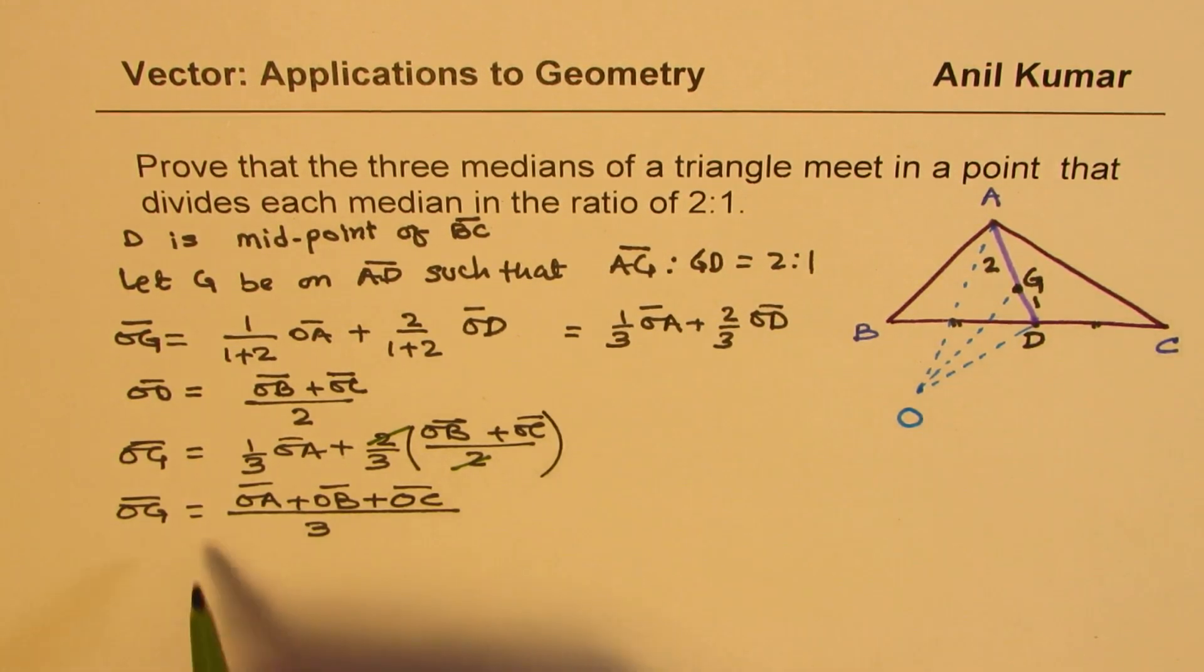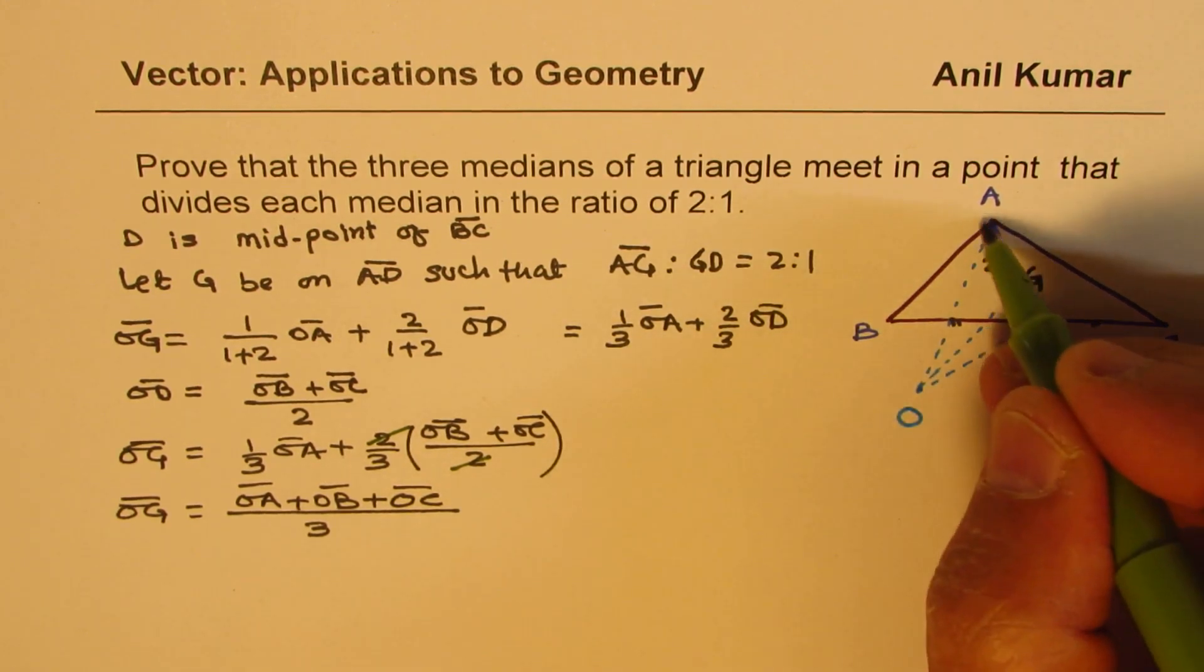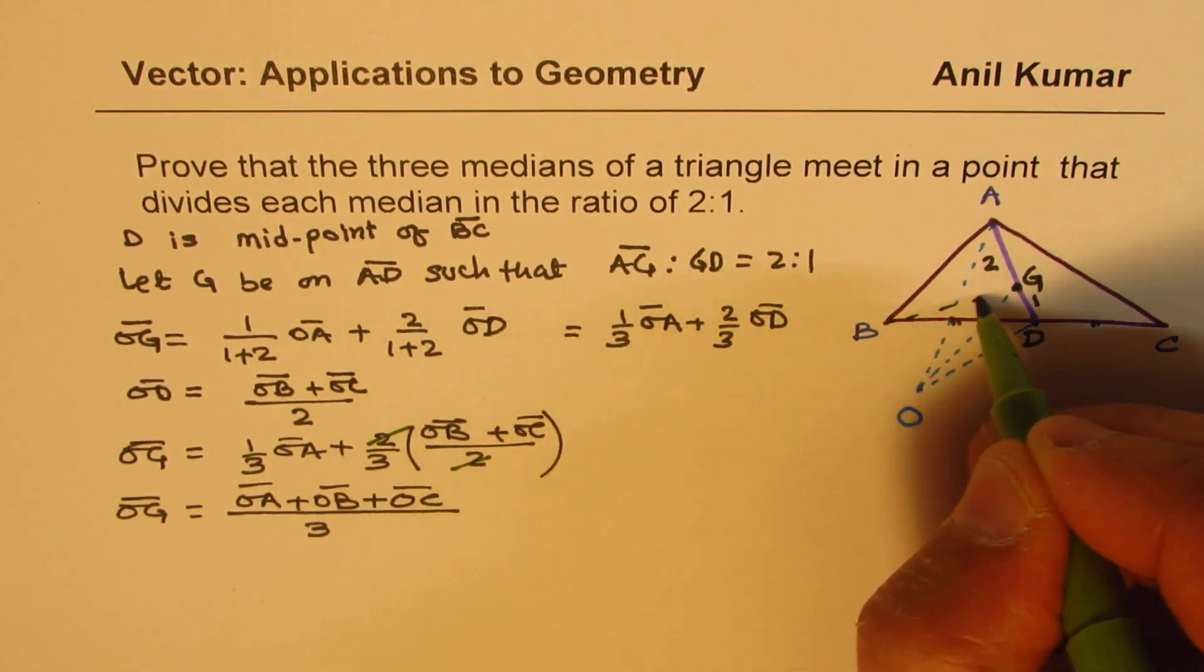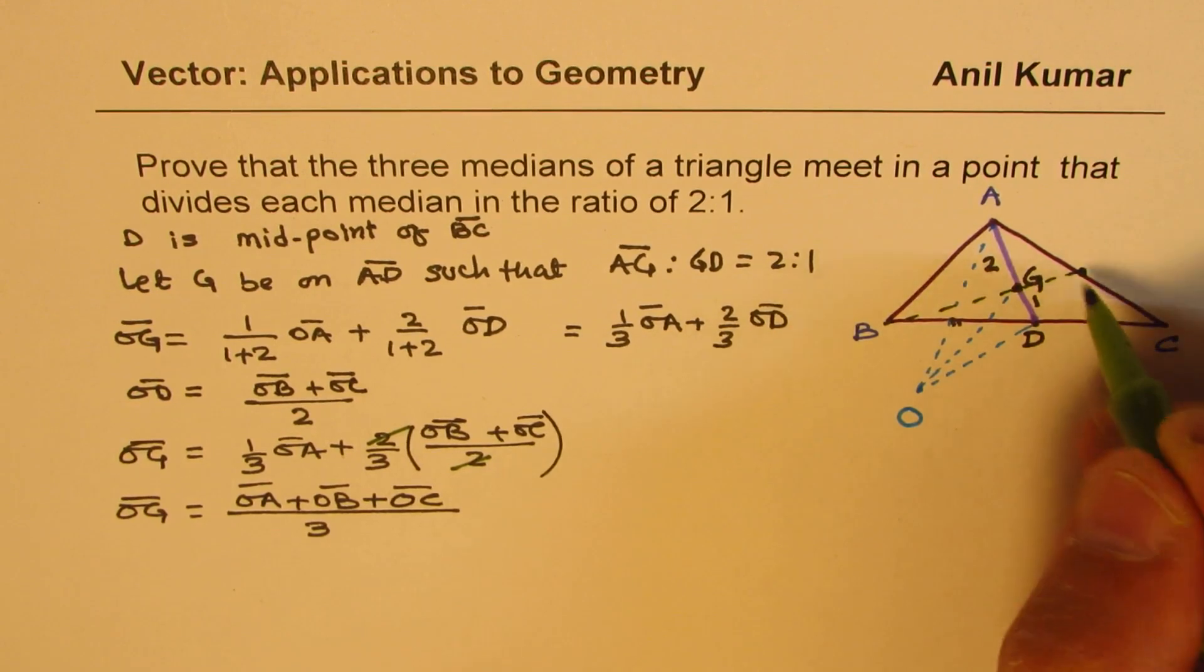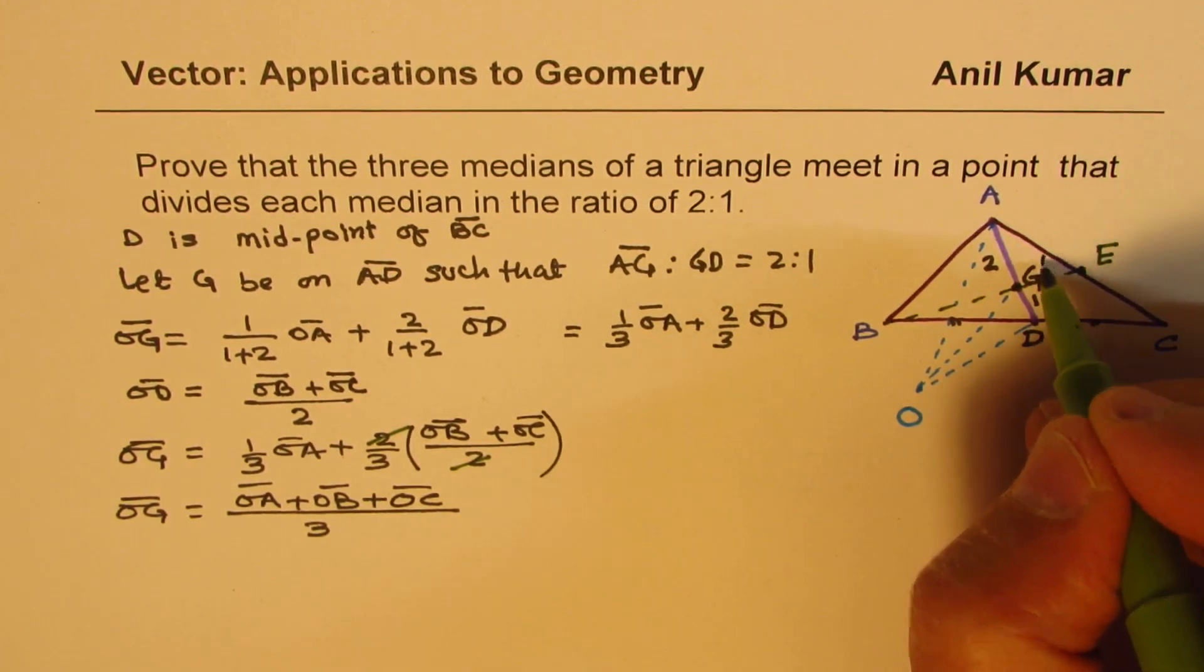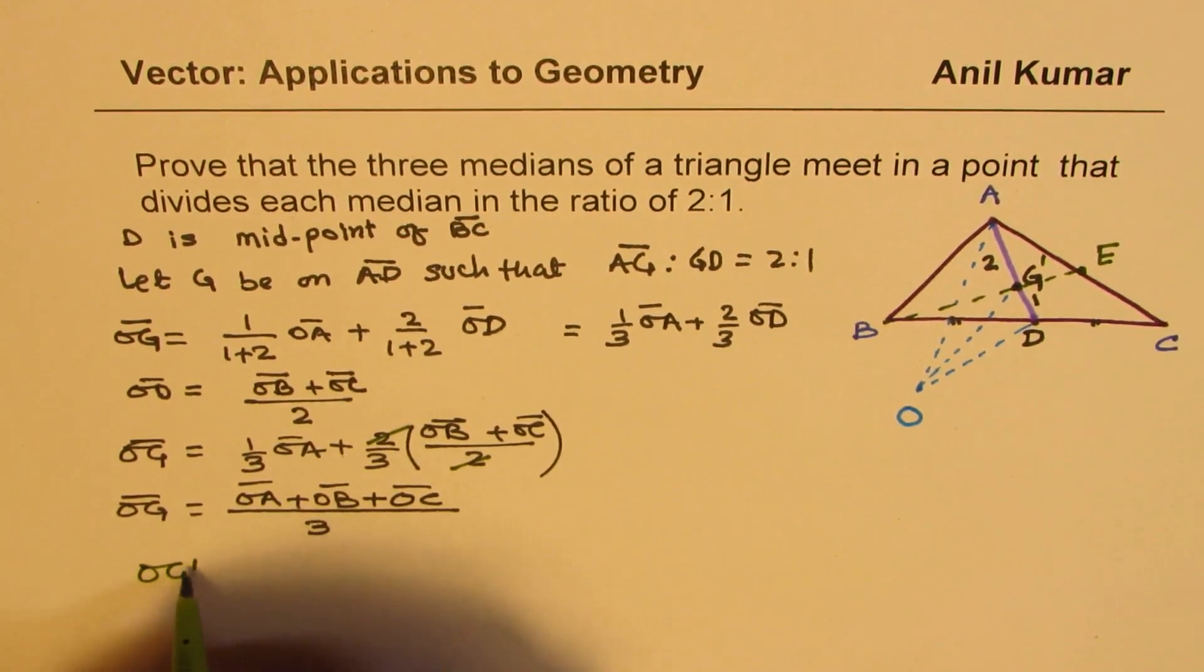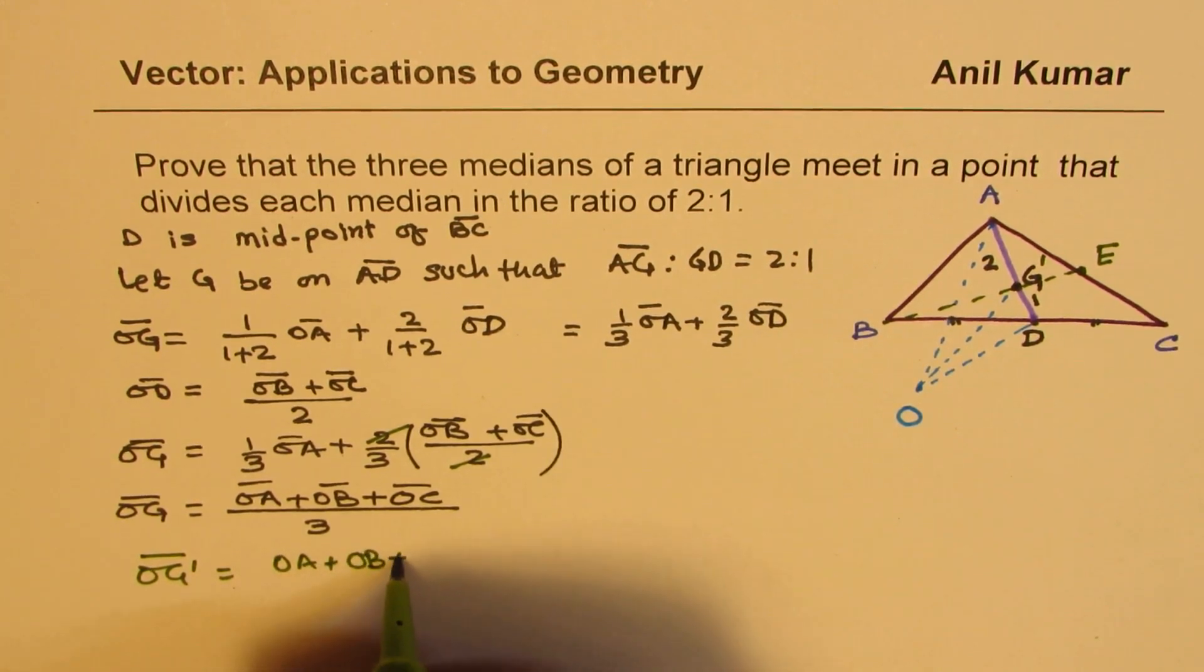Now what you could do is you could take another median, which is on AC from B. You can take another median. Let's say this is E. In that case, let's say the point is G' now for you. So you'll find that OG' is also equal to (OA + OB + OC)/3.